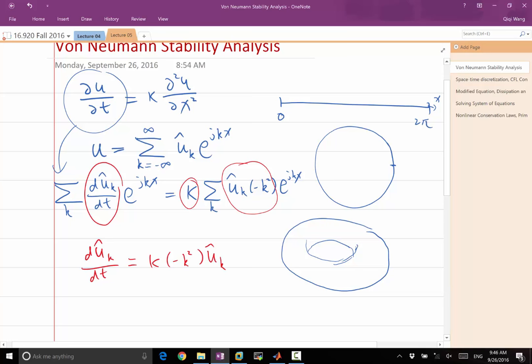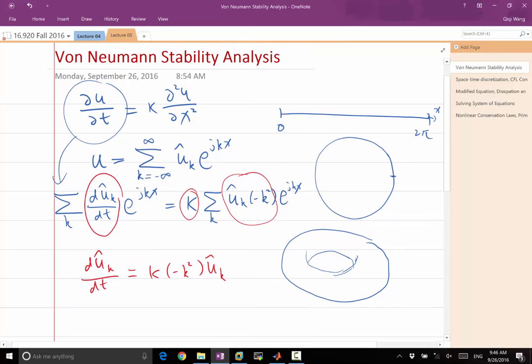So you know all the coefficients are decaying except for k equal to 0. And the bigger the k is, the bigger the magnitude of k is, the faster the coefficient decays. That is von Neumann's stability analysis for the continuous differential equation.